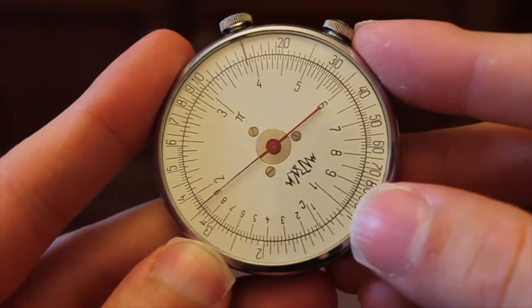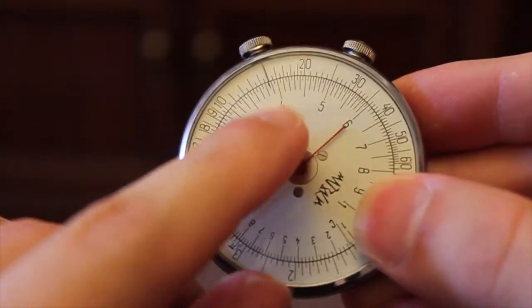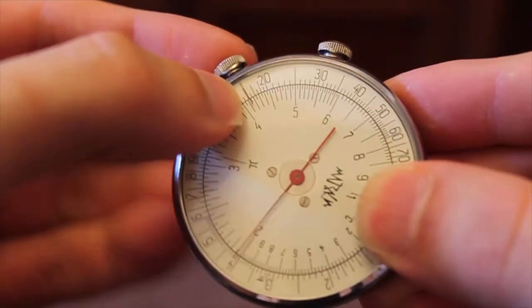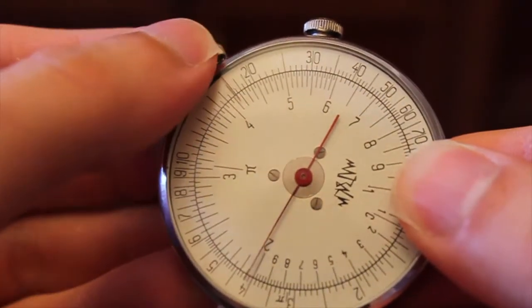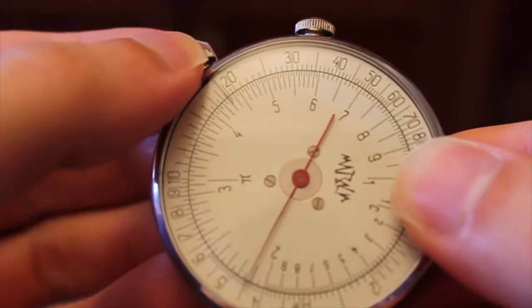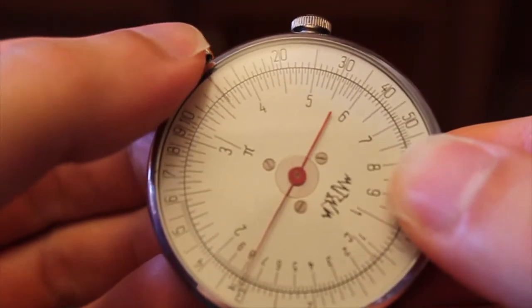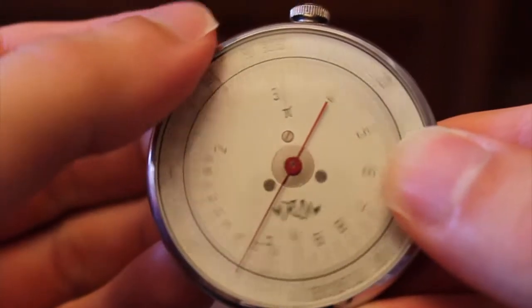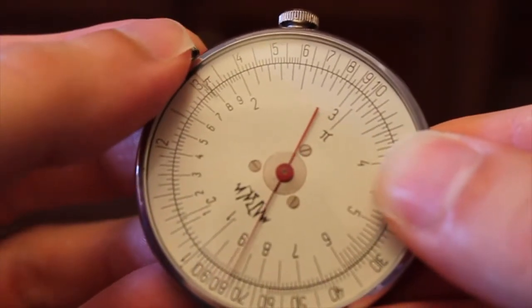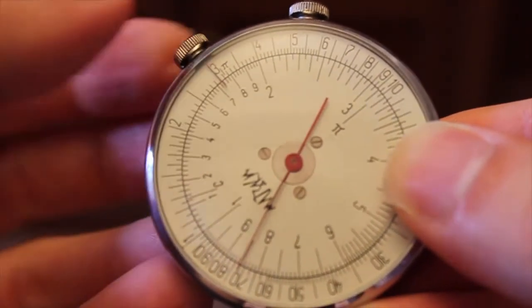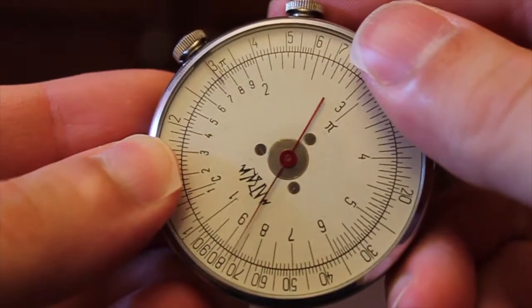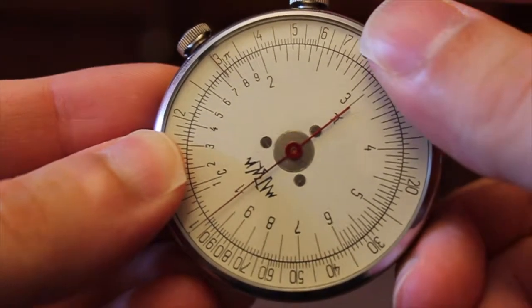Suppose you want to calculate 3 squared. Well, there is this red indicator here, right here. What I want to do is I want to place it at the position of number 3 here. So, I align it with 3. And if I want to square it, I need to put this arrow onto 1, like this.